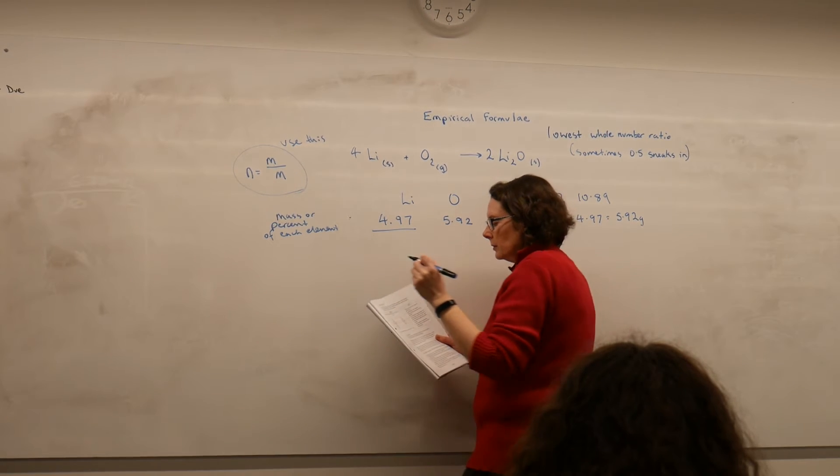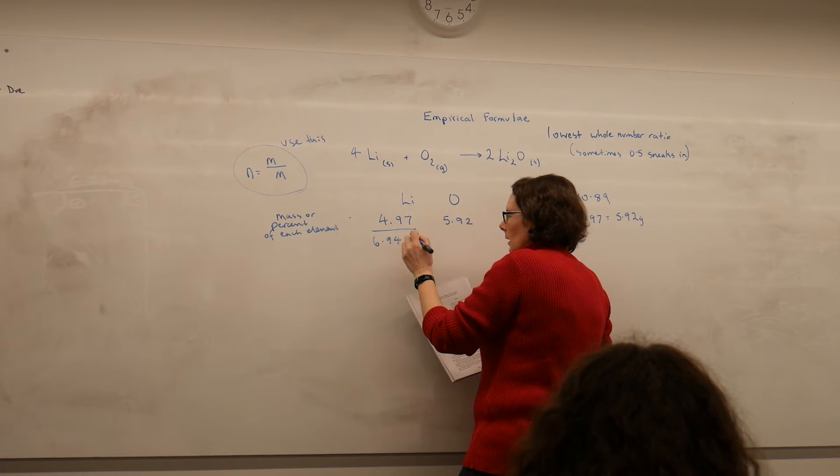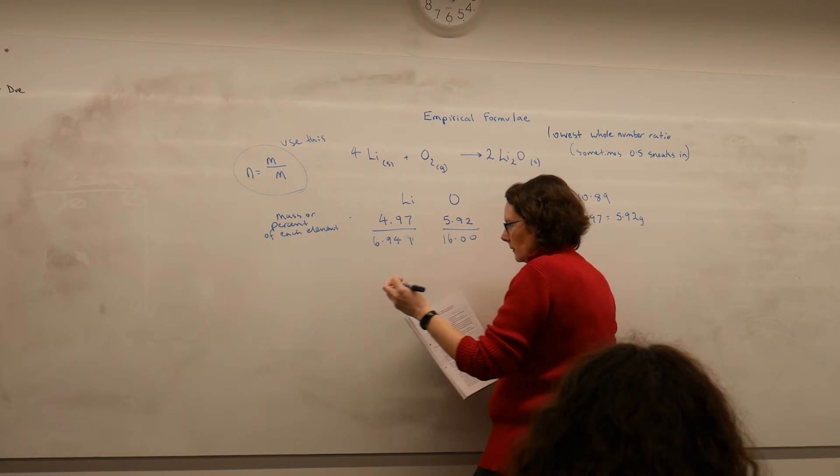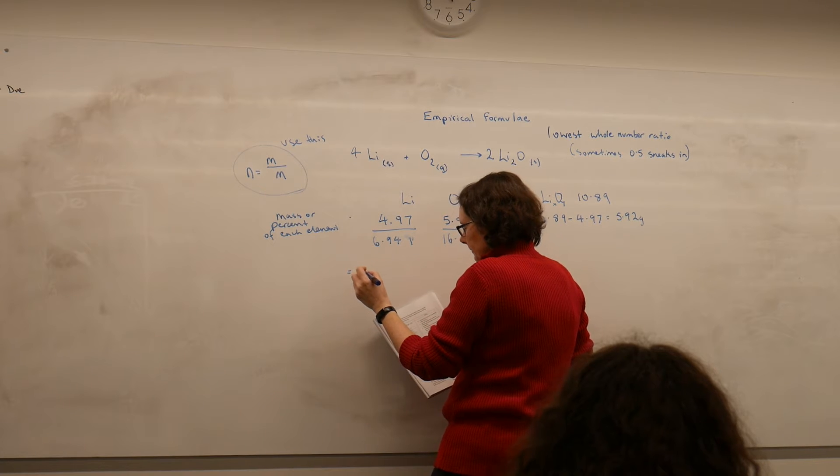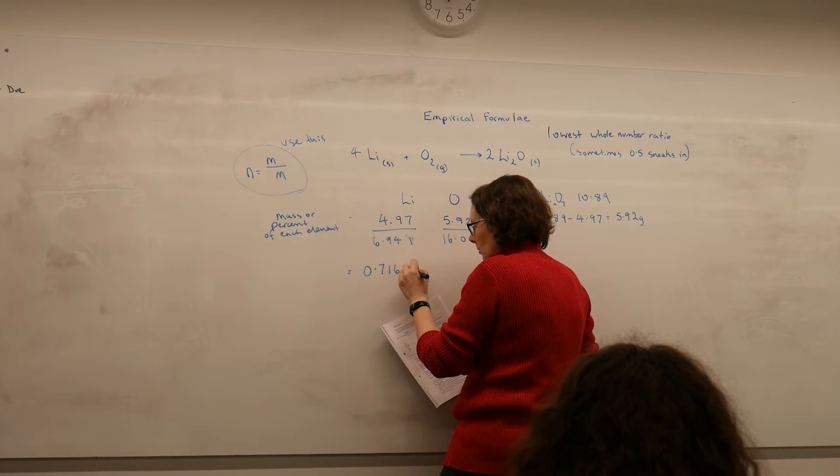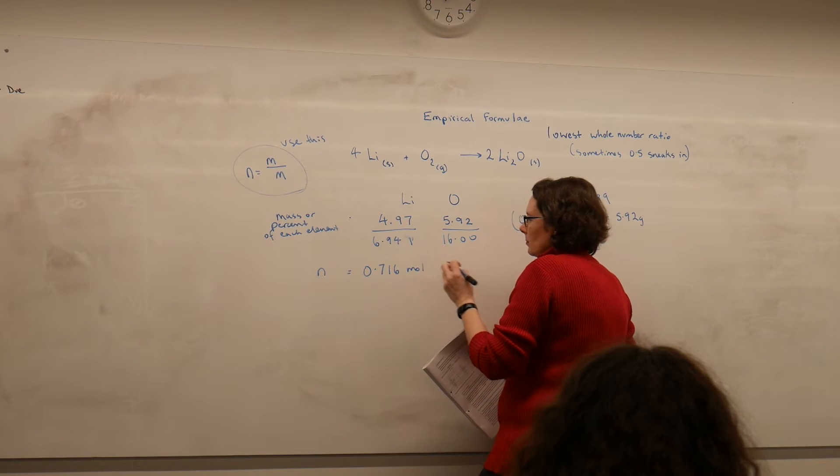So the atomic mass of lithium is 6.941, and the atomic mass of oxygen is 16.00, which tells me then 0.716 moles. Okay, that's what I calculated, moles.